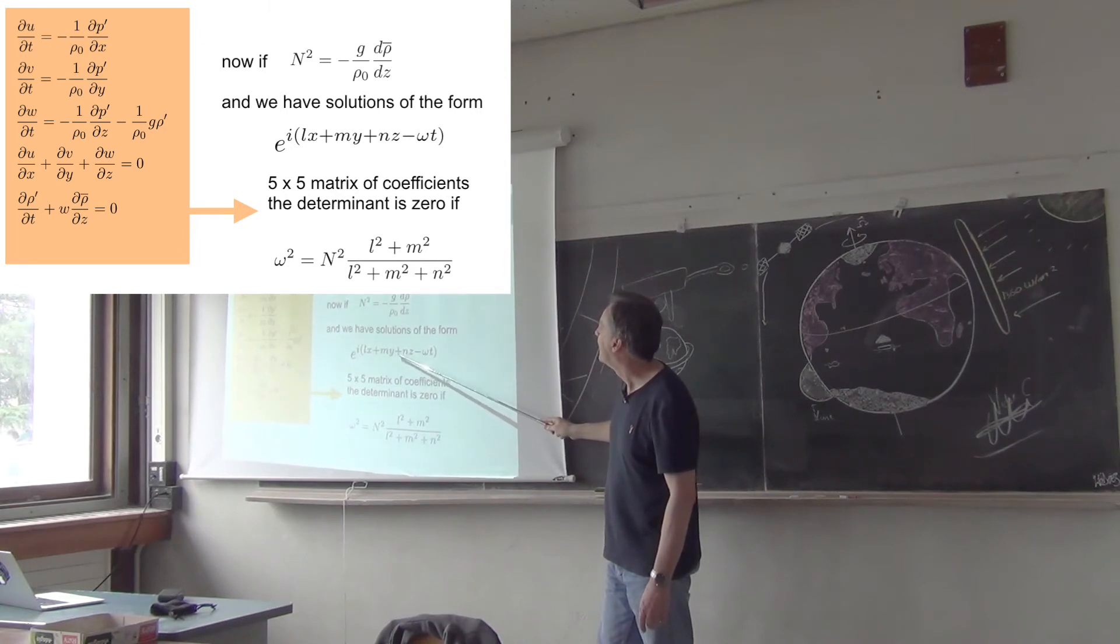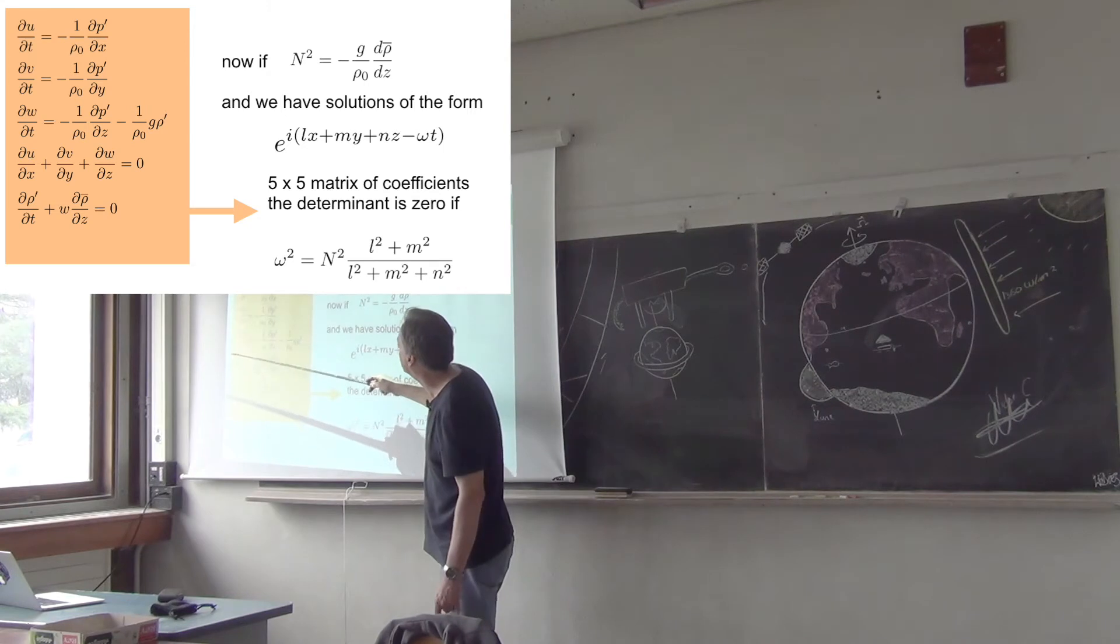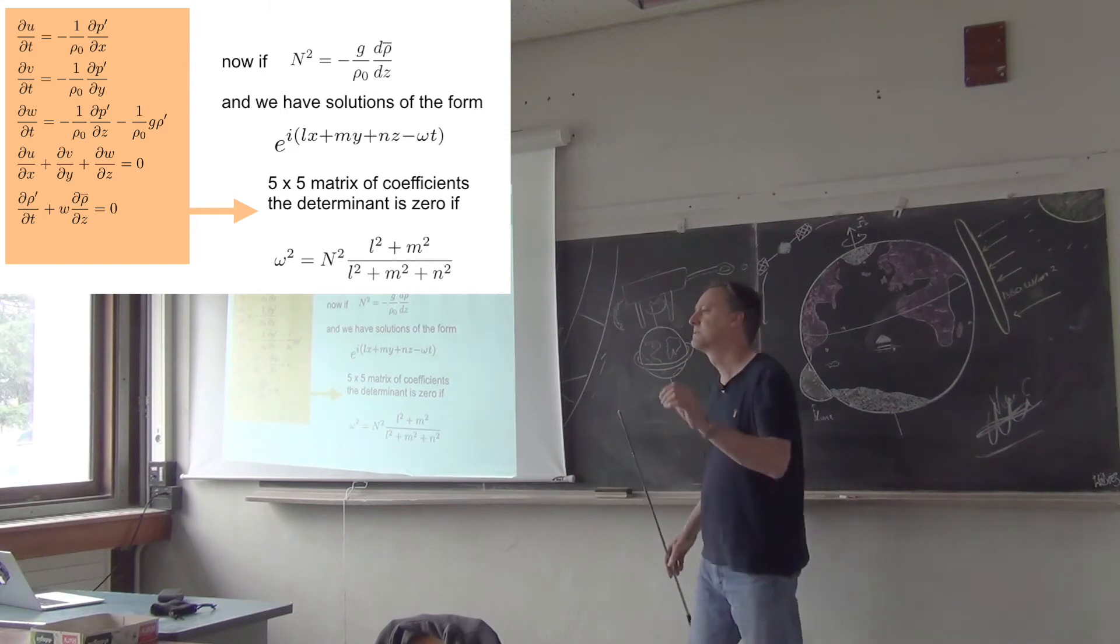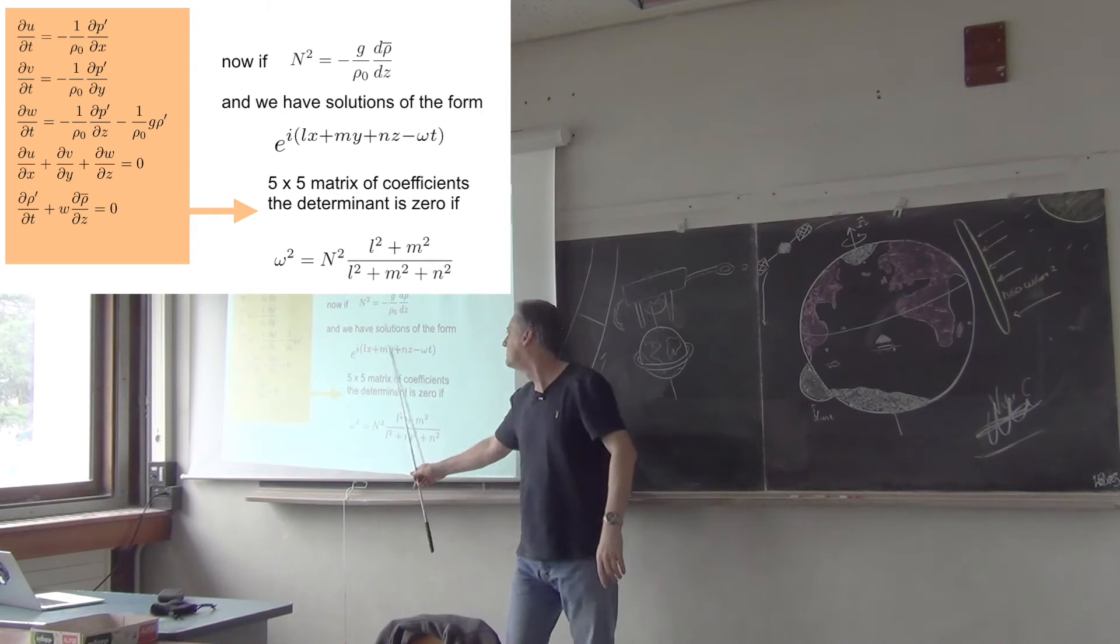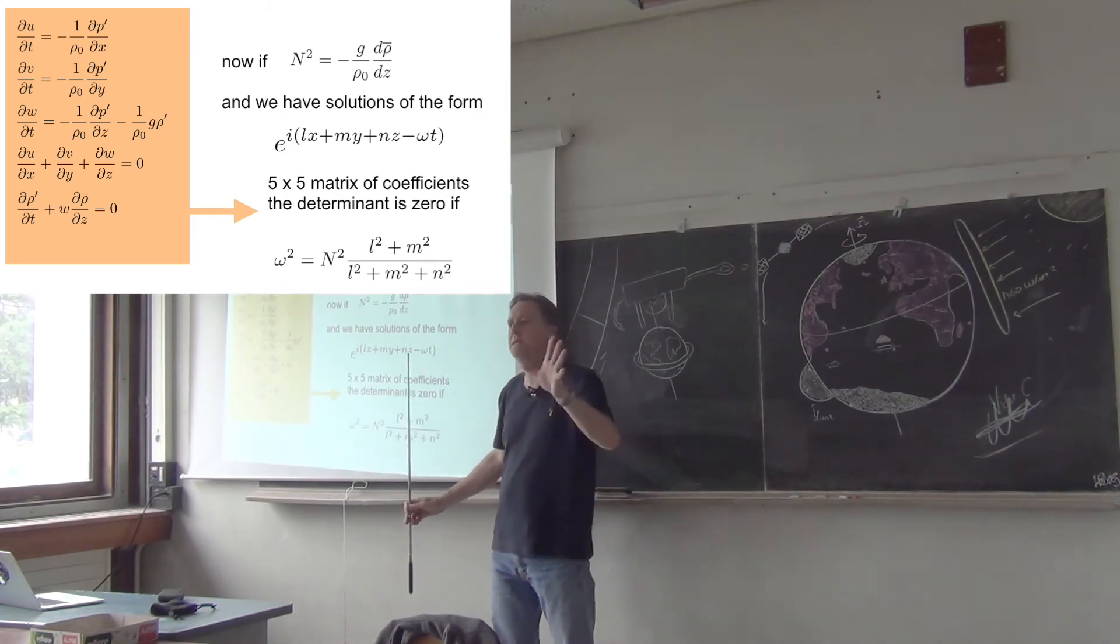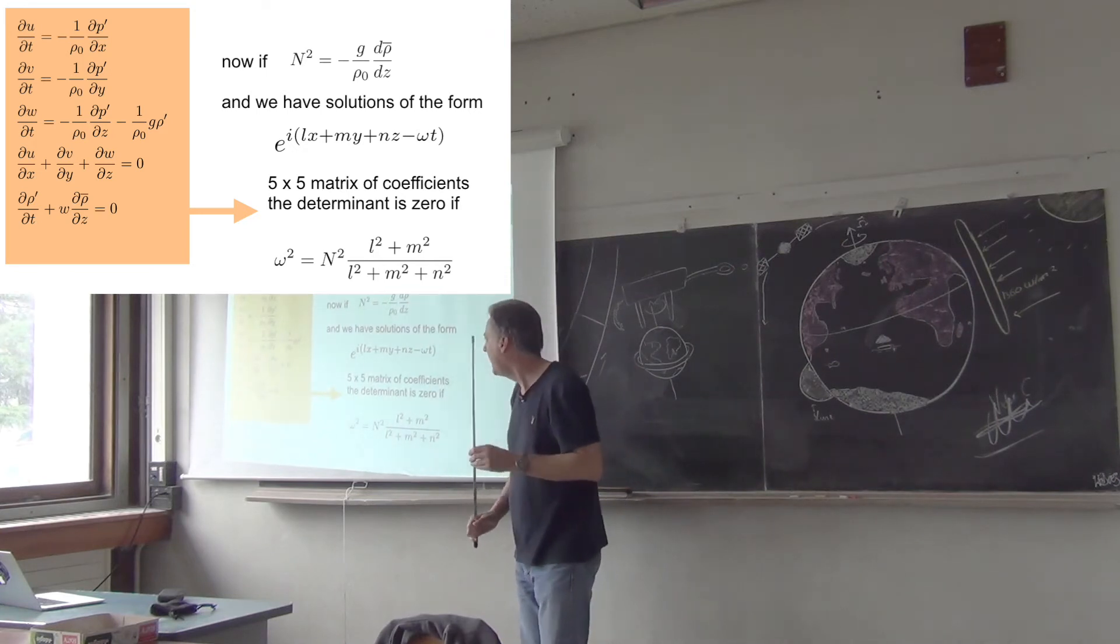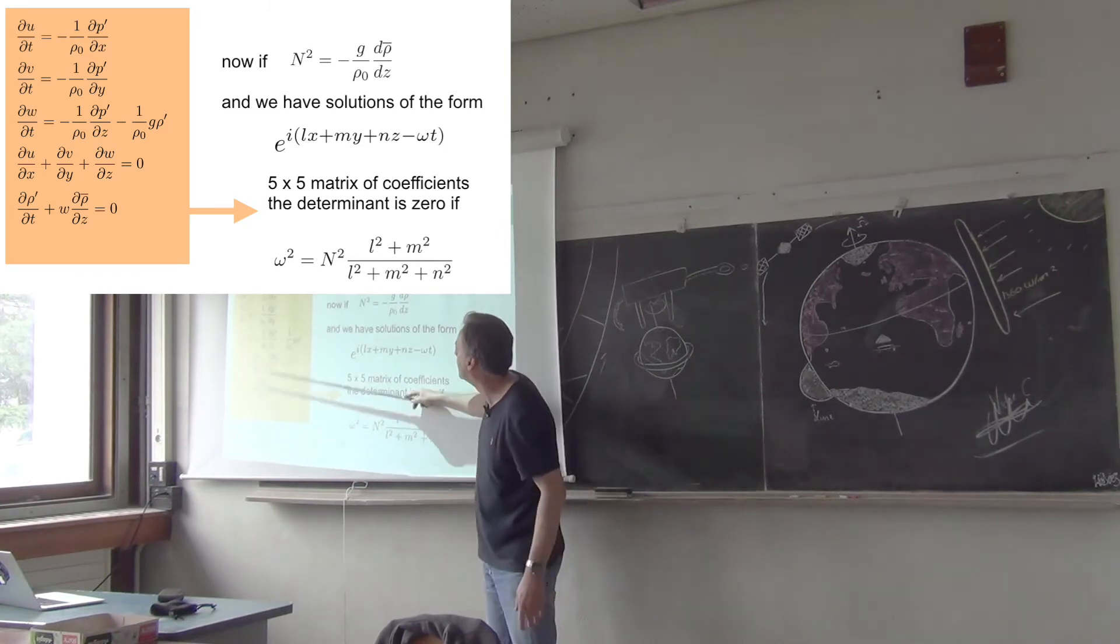Stick that solution in for every one of these variables. u, v, w, ρ, and p. So, just like before, we'll have coefficients. u is equal to u tilde times e to the i, all that stuff. v equals v tilde times e to the i, all that stuff, etc.